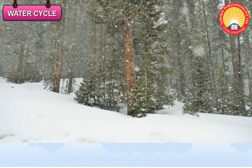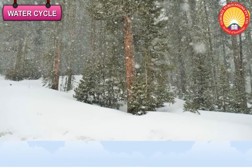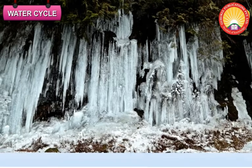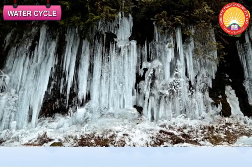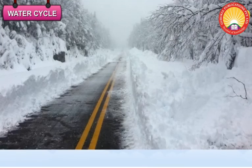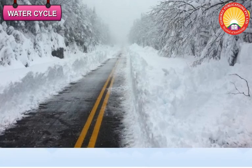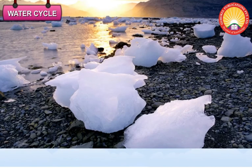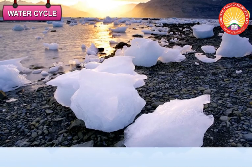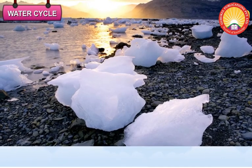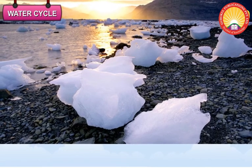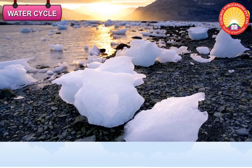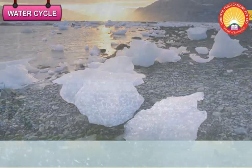Snow: When raindrops pass through a very cold region, they freeze into ice crystals and fall on the earth as snow. Ice: When snow becomes very hard, it is called ice.